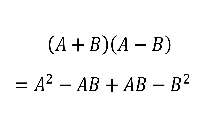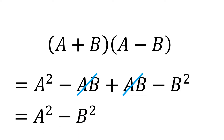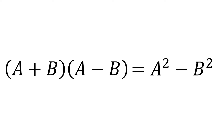Negative ab plus ab is zero. So this is equal to a squared minus b squared. So therefore, a plus b times a minus b is equal to a squared minus b squared.